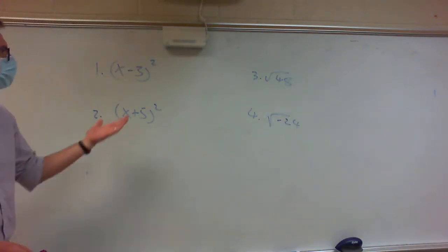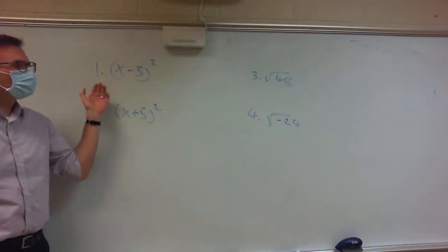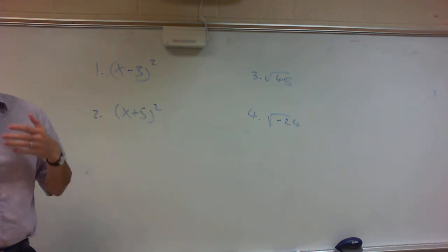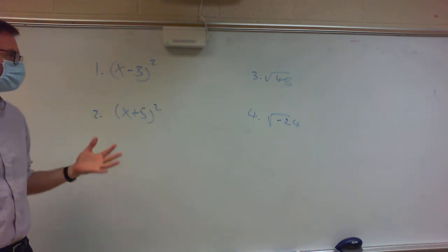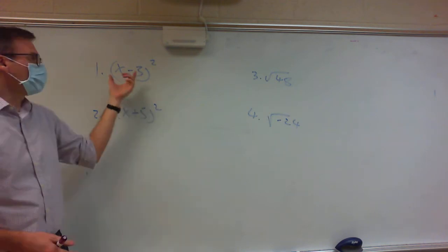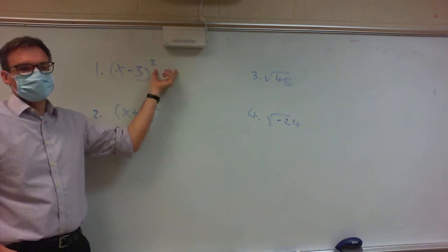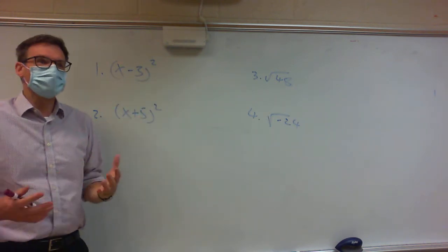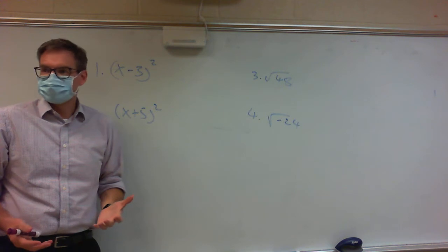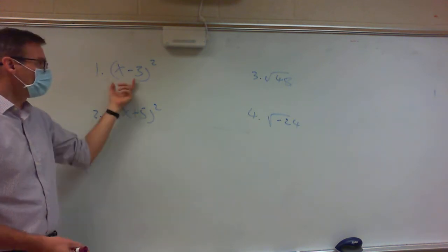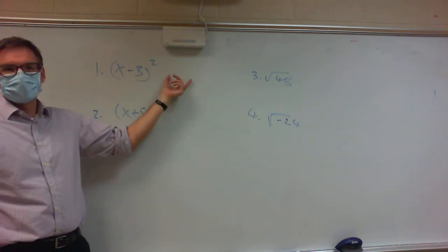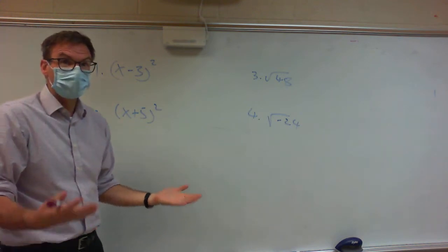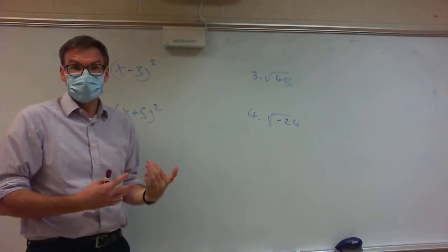All these should be kind of review. I do want to talk about when you square a binomial. You can write it out as x minus 3 times x minus 3 and multiply it out, but that's going to take way too long. I need everybody to look at this and instantly write down the answer. If that's what I want you to do, I should probably tell you how I think about it.